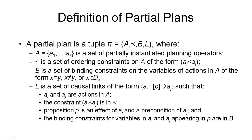Here is the formal definition of what constitutes a partial plan. A partial plan is defined as a four-tuple consisting of four components: actions, ordering constraints, variable bindings, and causal links representing the rationale why actions are in the plan. The first component is the set A of actions — specifically, partially instantiated planning operators. We take planning operators, may bind some variables with values, and those are our partial actions. They form a set, not a sequence, so they are not necessarily ordered with respect to each other.